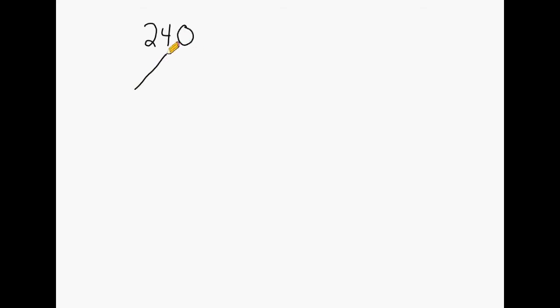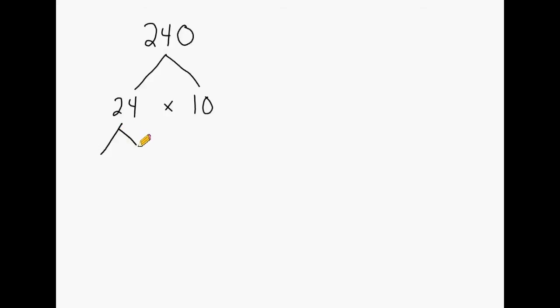Let's try another example. Let's say we have the number 240 and we want to break that number down into all prime factors. 240 is a composite number, and we're going to start by multiplying two numbers that produce 240. Because 240 ends in a zero, we should recognize that we may multiply 10 by 24. 24 is still a composite number, so we may break that down even further — one thing that comes to mind is 3 times 8. 3 is a prime number so we may circle that.